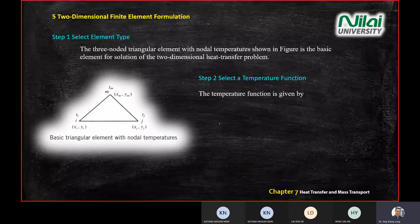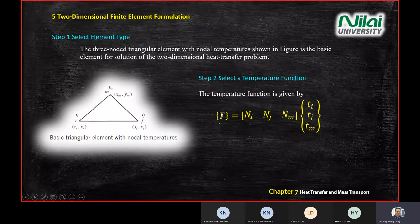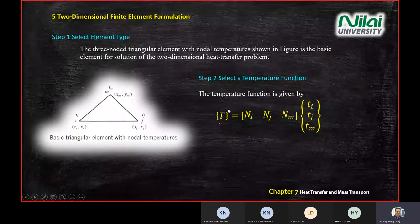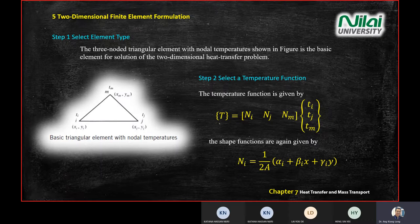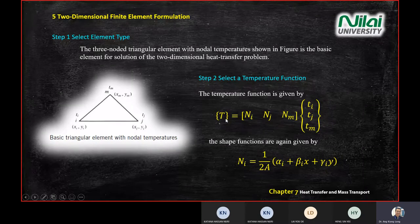Step two: develop the temperature function. Like in 1D, T equals shape function N times the temperature vector — capital T equals N times t. You still have the same form; you just combine all the nodal temperatures together. The shape function Ni is given by a formula on screen.